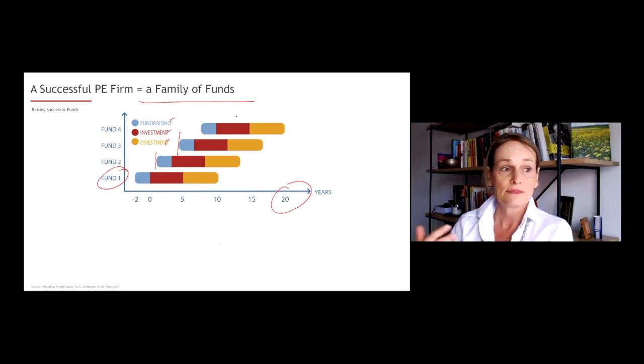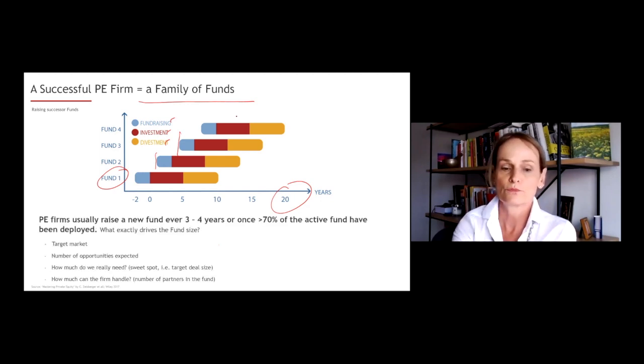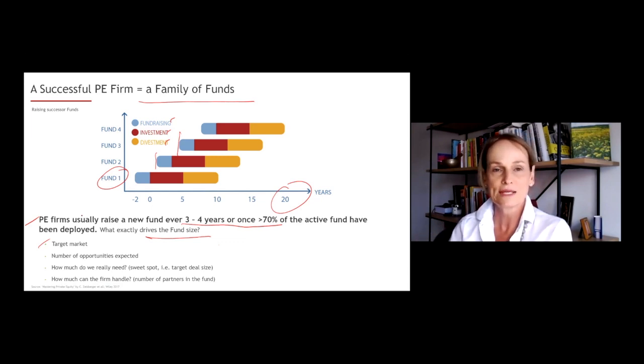Usually, this is determined by the amount of funding left in the predecessor fund. So as soon as about 70 to 80 percent of the fund has been spent, i.e. investments have been made, we will see that a successor fund is being raised. So let me recap that private equity firms raise a new fund every three to four years. Once about 70 percent of the active fund have been deployed. What drives the fund size? Usually you will see that fund one was smaller than fund two, fund two smaller than fund three. Again, in a successful private equity firm, it usually is determined by the target market, the number of opportunities that the fund is expecting to see in the coming five years during the investment period, and basically also to some extent on the sweet spot of the private equity firm, meaning what is our ideal deal size that we're seeing out there.